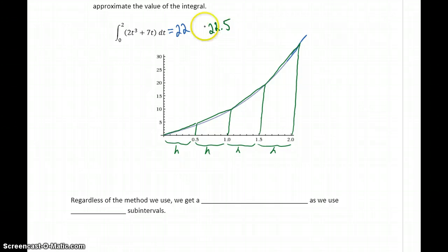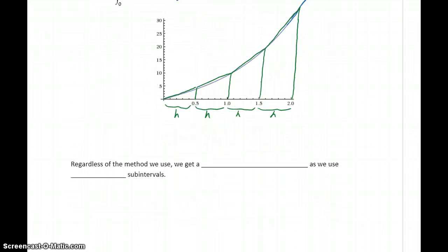Obviously, 22 and 22.5 are very close to each other, so this trapezoidal method gives us a way to, in some cases even better than that midpoint method, really minimize the amount of error in our approximations, getting closer and closer to what that exact value should be.